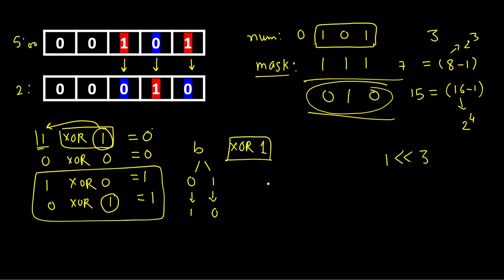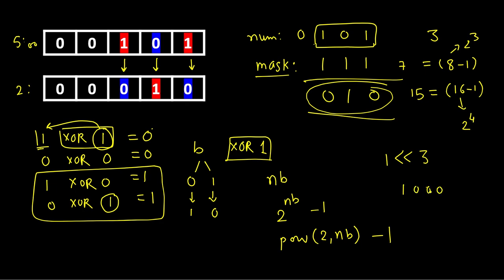If the number of bits is n, we need 2^n minus 1. You can either use the power function and subtract 1, or left shift 1 by n positions — left shifting 1 by 3 gives 1000, which is 8 — and then subtract 1. That gives the mask. Then do XOR of the mask with the original number to get the complement. Let's implement this in C++, then Java and Python.